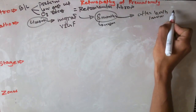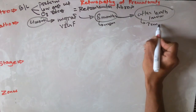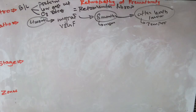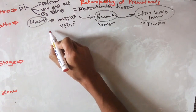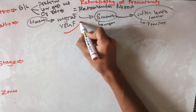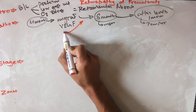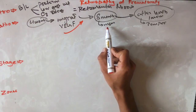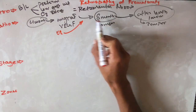After one month of birth, the temporal region blood vessels develop. If excessive oxygen supplementation is done during this time period, then the migration is affected — meaning there will be no migration, and as a result the vasculature does not develop.